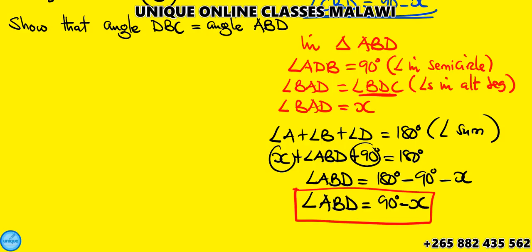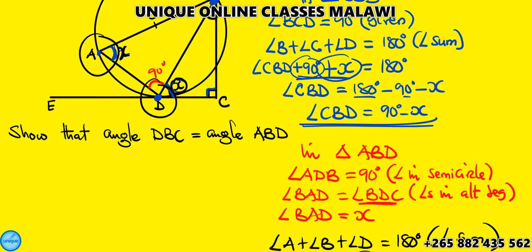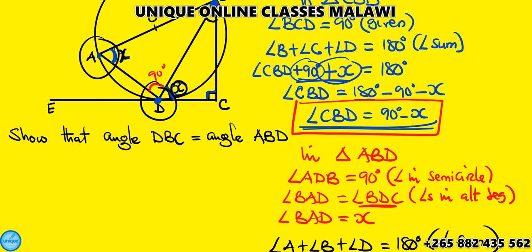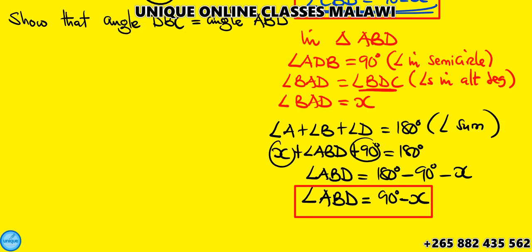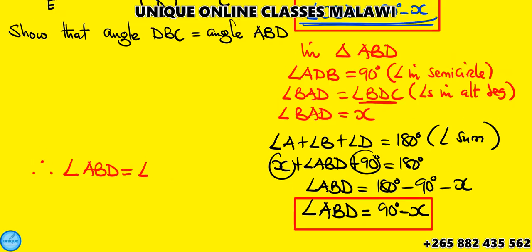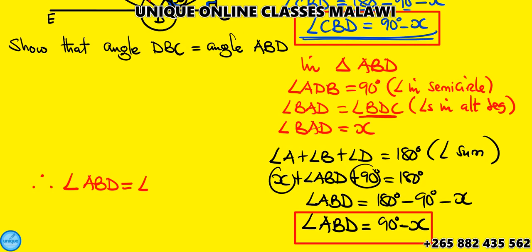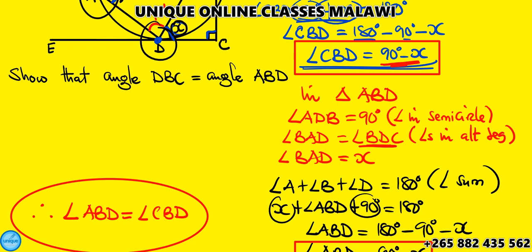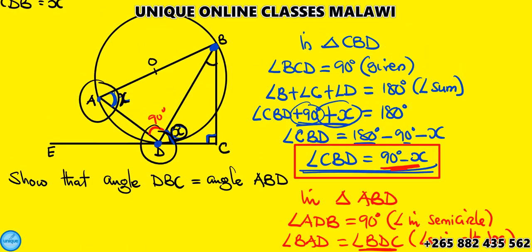You can see that angle ABD and angle CBD are the same: 90 degrees minus x and 90 degrees minus x. Therefore, angle ABD equals angle CBD. That's the proof.